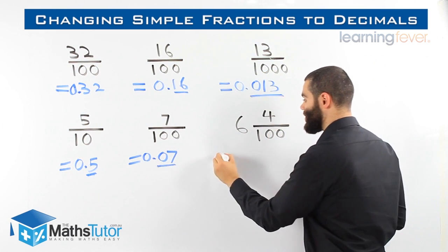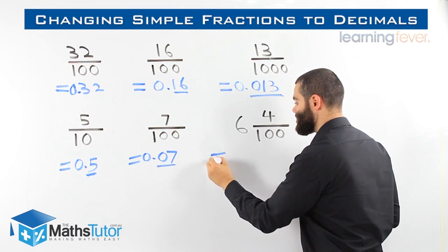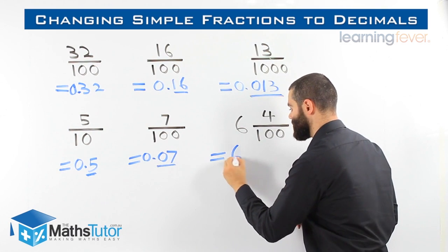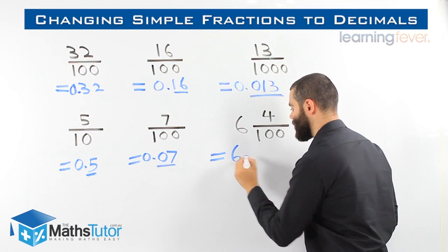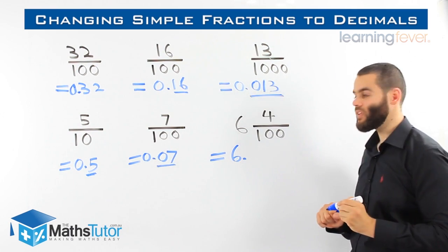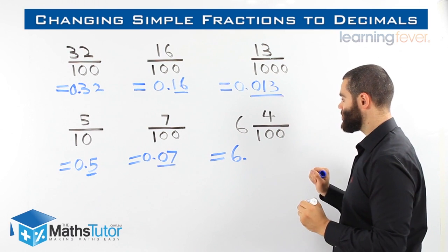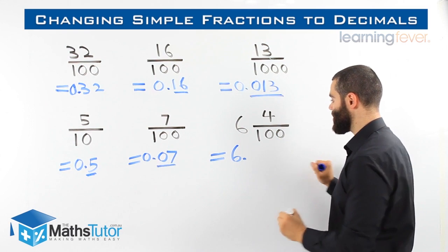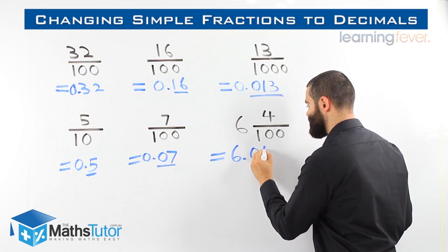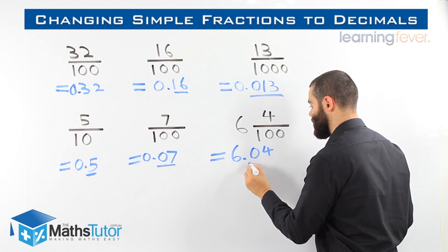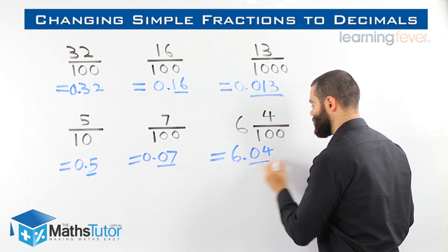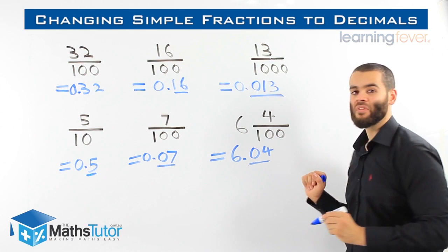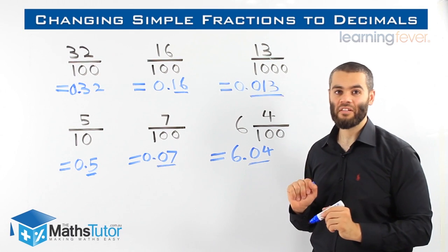Another example — we have a whole number here. Our whole number is going to go in the units place: 6 point. Our 4 — we have two zeros, which means we're going to have two numbers after the point: 6.04. Two numbers after the point because there are two zeros.